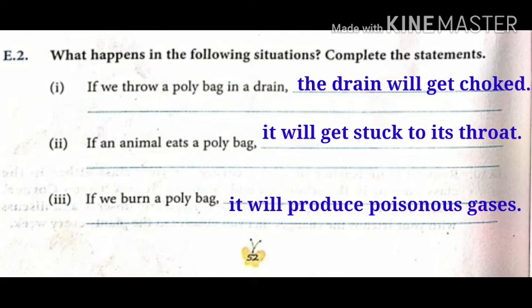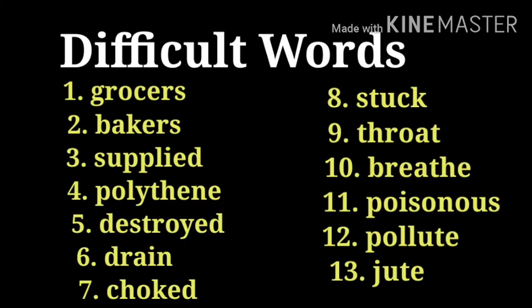the drain will get choked — write it in the given blanks. Number two: if an animal eats a poly bag, it will get stuck to its throat. Number three: if we burn a poly bag, it will produce poisonous gases. Now write it neatly and carefully. After completing page number 52, write down the difficult words in your reader copy.